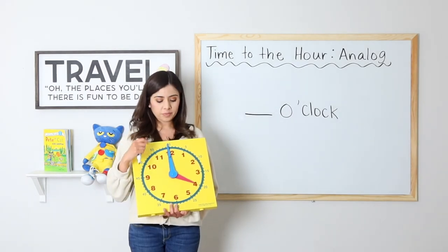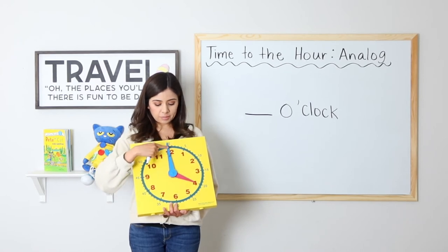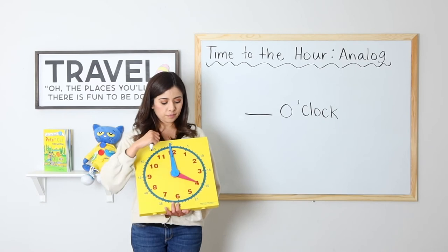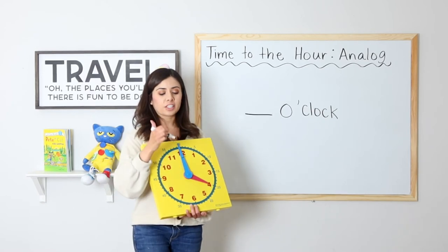Okay, so what time is it here? The hour hand is pointing to the four and the minute hand is pointing to the 12. So it is four o'clock. Four o'clock. Very good.